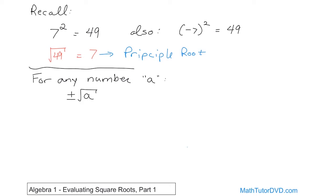For instance, if you have the square root of 49, like we said, it's going to be plus or minus 7, because positive 7 times positive 7 is 49, and also negative 7 times negative 7 is also 49. So keep that in mind. Just another quick example: what if you had the square root of 81?